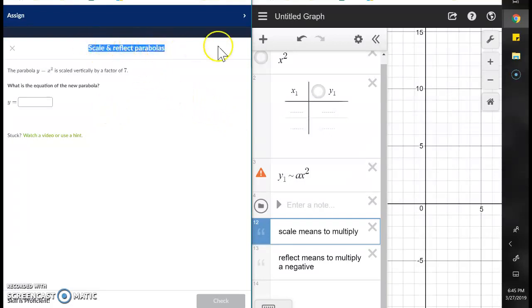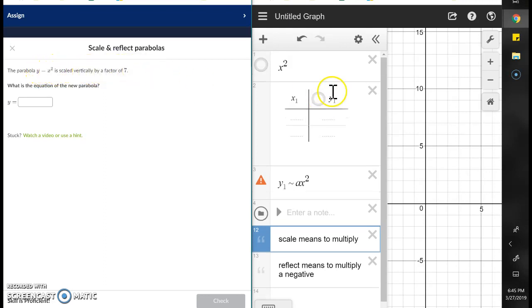All right, here we've got scale and reflect parabolas. Scale means to multiply, and reflect means to multiply by negative. The parabola y equals x squared is scaled vertically by a factor of 7.